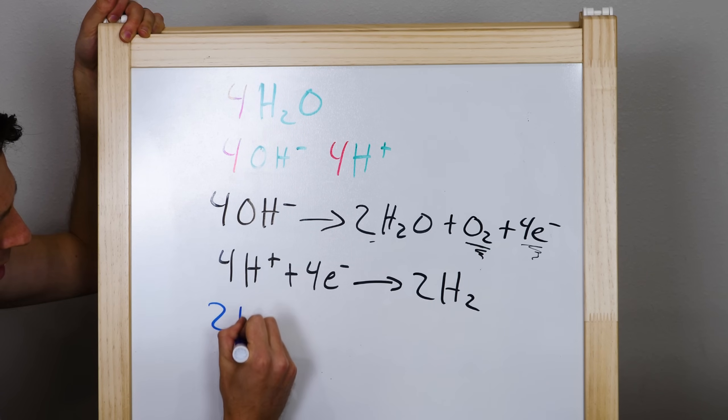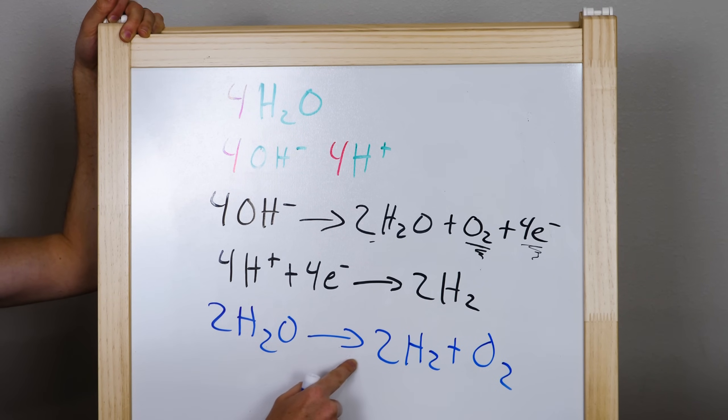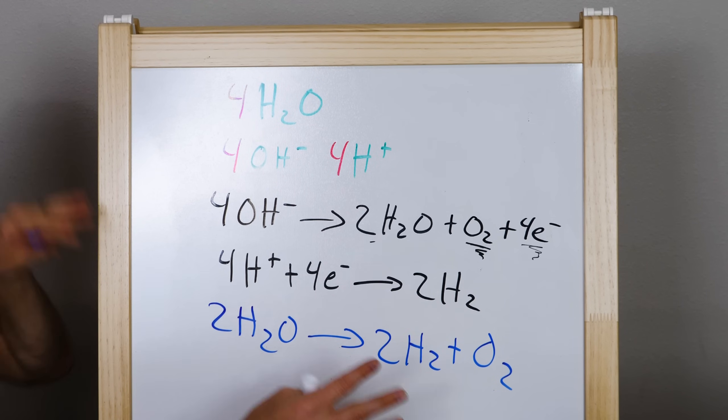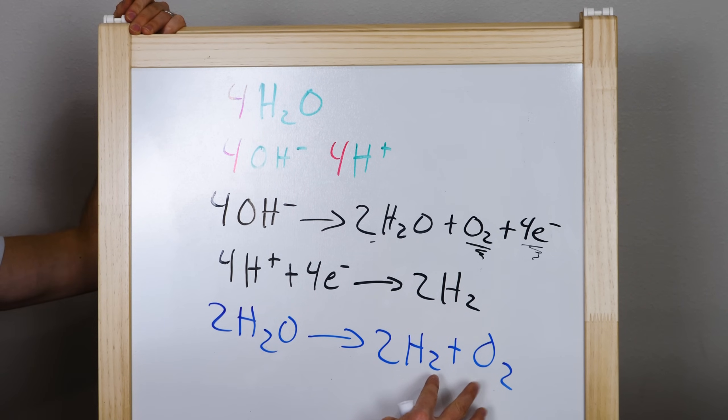So the overall equation that happens here is two water molecules get converted into two hydrogen molecules and one oxygen molecule. And both of these just bubble out of the gas. So you've successfully separated this water into its individual components of hydrogen and oxygen, which is pretty cool.